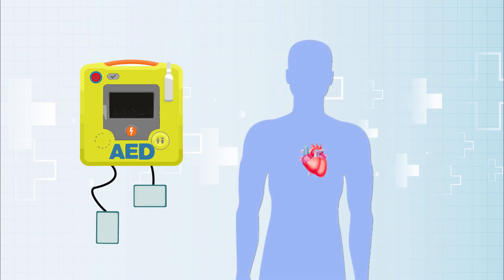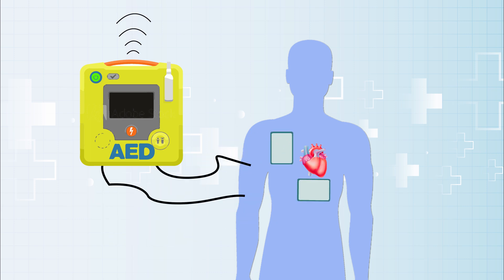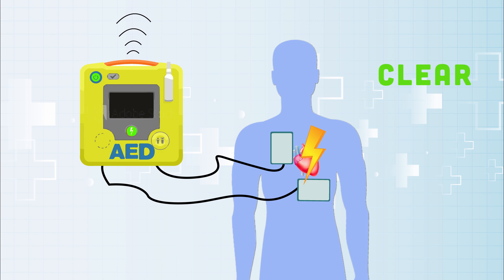Use an AED as soon as one is available. Turn on the AED — it will give you step-by-step instructions. Wipe the chest dry and attach the pads as shown in the instructions. If a shock is indicated and suggested by the AED, assure no one is touching the patient or in contact with a good conductor of electricity by yelling 'clear,' then press the shock button. Then resume 5 cycles of CPR.